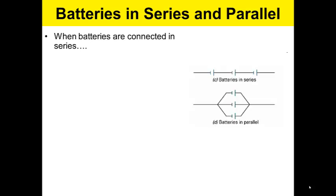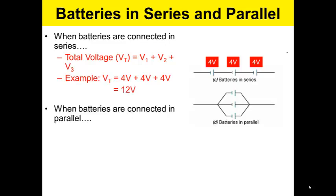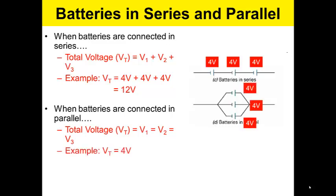When batteries are connected in series, the total voltage is equal to the voltage of each battery. So 4 plus 4 plus 4 is equal to 12 volts. When batteries are connected in parallel, the voltage does not add, so the voltage is the same. So you would have 4 volts, not 12, as you would in a series.